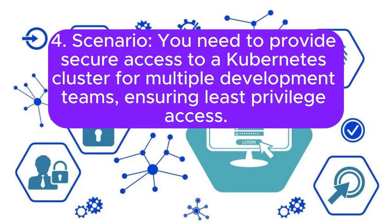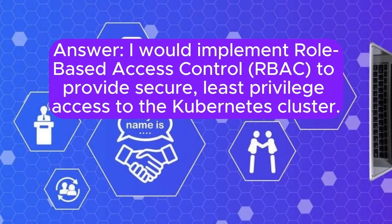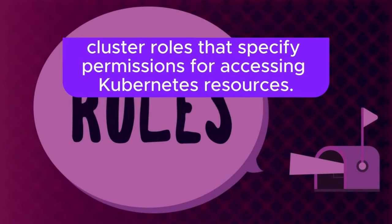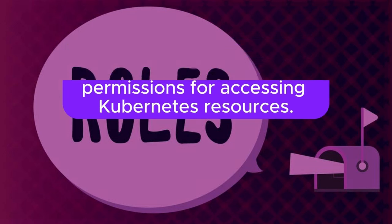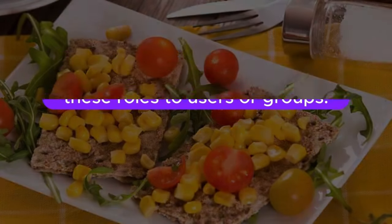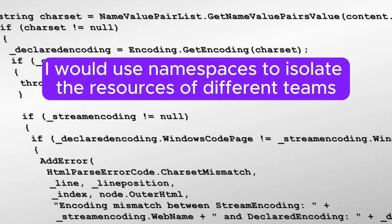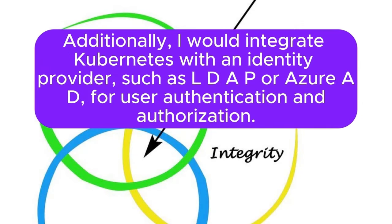Scenario 4: You need to provide secure access to a Kubernetes cluster for multiple development teams, ensuring least privilege access. How would you set this up? Answer: I would implement Role-Based Access Control (RBAC) to provide secure, least privilege access. I would define roles and cluster roles that specify permissions for accessing Kubernetes resources, then create role bindings and cluster role bindings to assign these roles to users or groups. I would use namespaces to isolate resources for different teams. Additionally, I would integrate Kubernetes with an identity provider such as LDAP or Azure AD for user authentication and authorization.